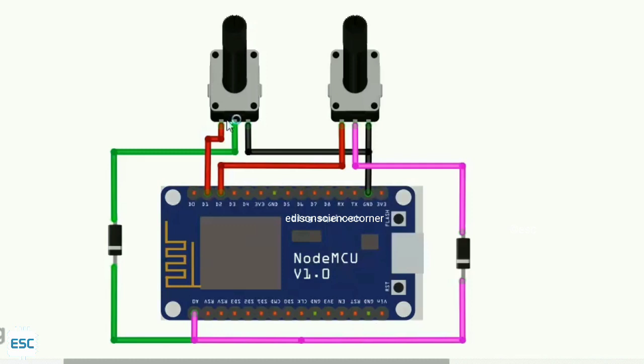So this is our circuit diagram. For demonstration, I am using two variable resistors. How to read two data from two different sensors using one analog pin? You can see here I connected positive pins of variable resistors to digital pins of NodeMCU.